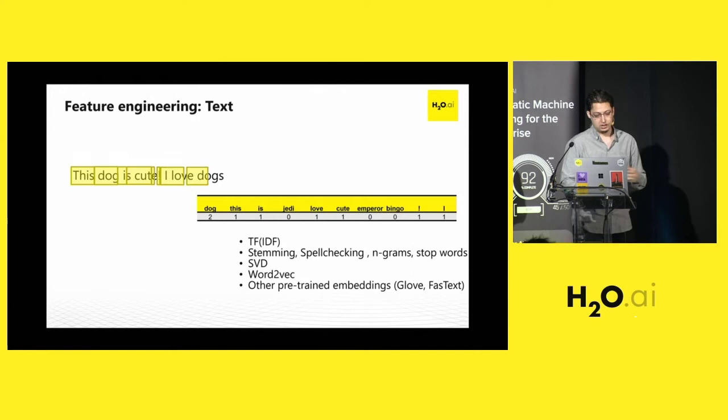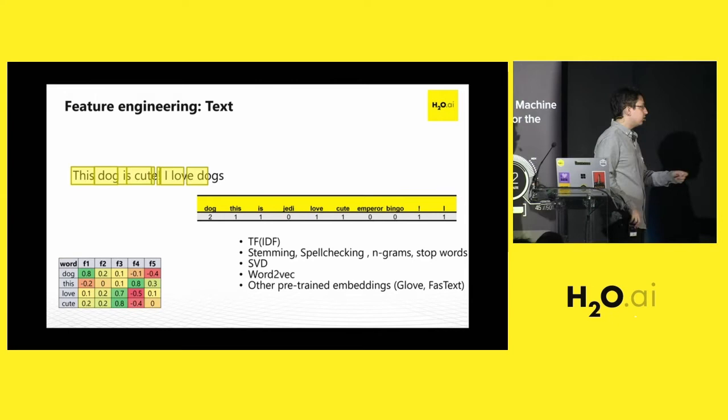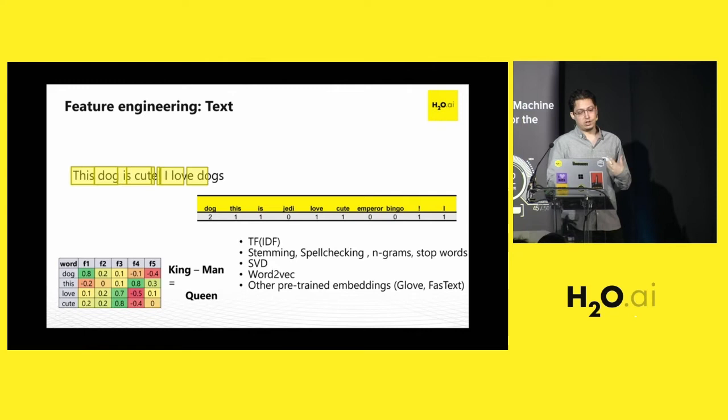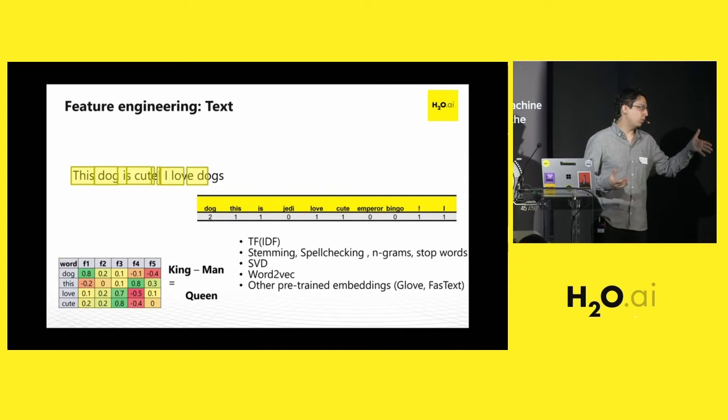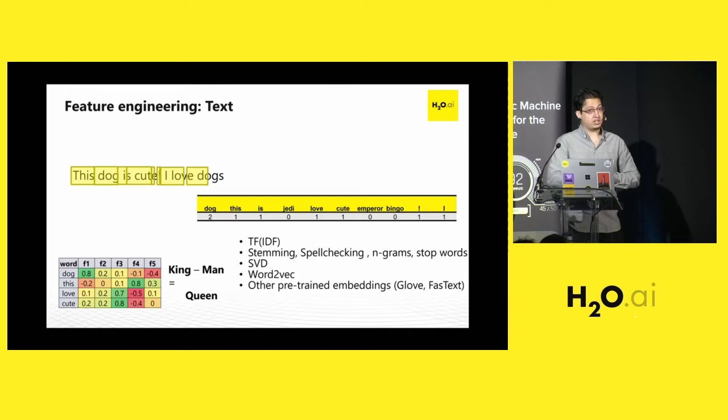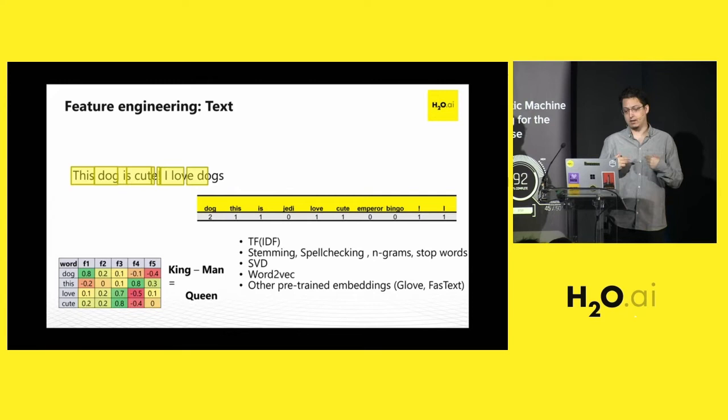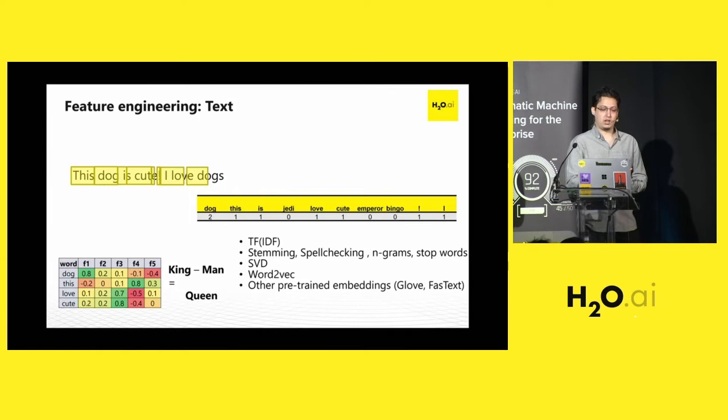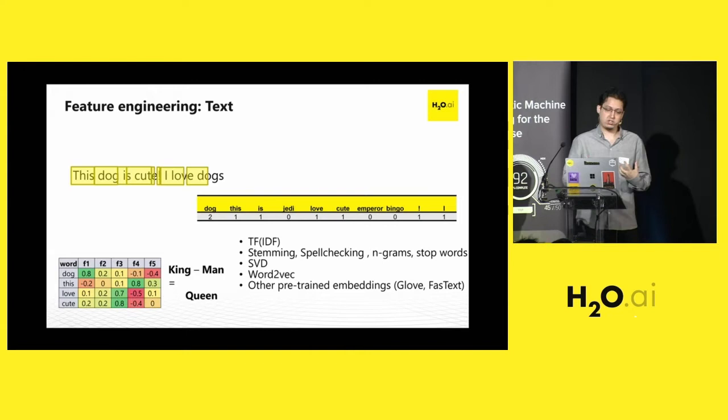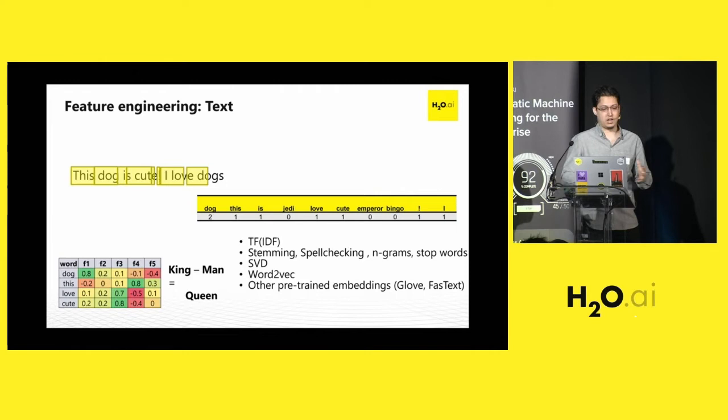We could use something called Word2Vec. It's based on deep learning and tries to represent each word with a series of numbers in a way that you can do mathematical operations between words. If from the word king I subtract the word man, the closest result is the word queen. I've seen it working this way. It doesn't always work so interestingly, but definitely this representation can give you very good insight about what a word is really about. Therefore, features derived from this representation can help you a lot in NLP problems.